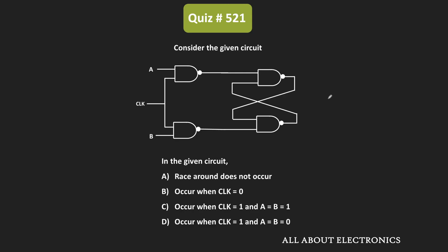We can conclude that for the given sequential circuit, the race around condition won't occur for options B, C, and D. Therefore, for the given question, this is the correct answer.